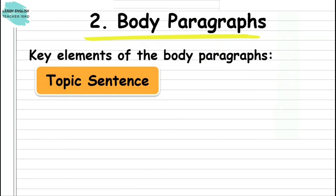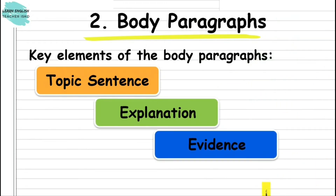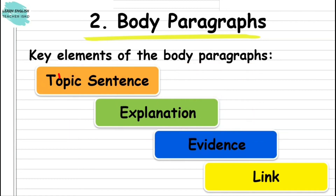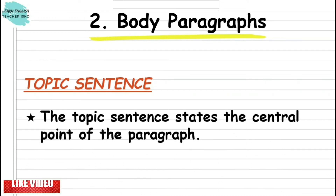Let us now talk about body paragraphs. These are the key components of the body of a persuasive essay: topic sentence, explanation, evidence, and link — what we call TEEL, or the T-E-E-L acronym. T for topic sentence, E for explanation, another E for evidence, and L for link. The topic sentence states the central point of the paragraph, and will be in the form of one of the reasons in support of the thesis statement made in the introduction. The topic sentence also serves to unify the other sentences in the paragraph.